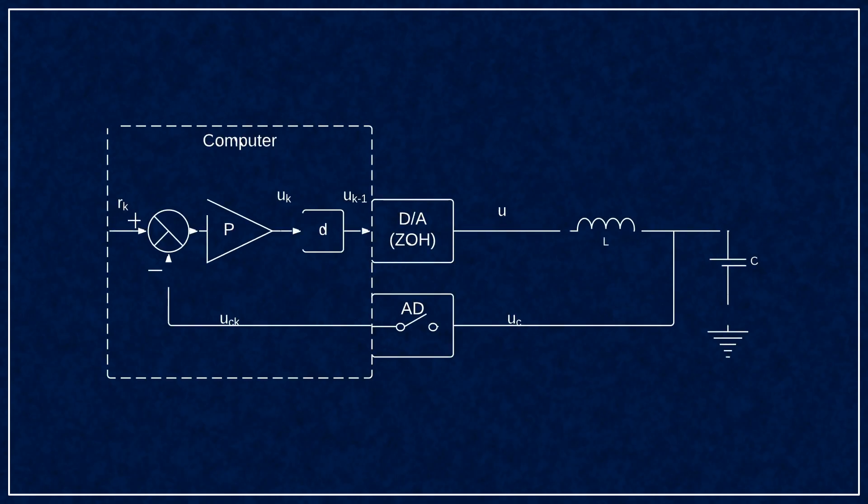First off, here's our example system. It's an LC circuit with the capacitor voltage measured in the AD converter, and the inductor voltage generated by the DA converter. The controller is just a proportional gain, and there is one unit delay to model digital delays.